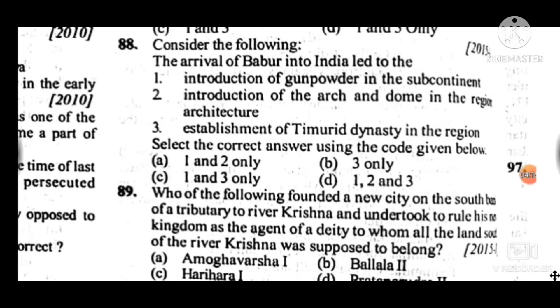Question 89: Who of the following founded a new city on the south bank of a tributary to the river Krishna and honored it by ruling his number of kingdoms as the agent of the deity to which all the land south of the Krishna river was supposed to belong? Answer to question 89 is C: Harihara I.